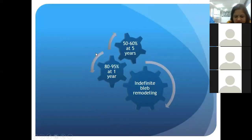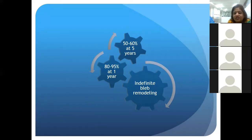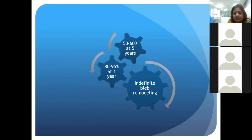We all know that trabeculectomy even today remains the gold standard for glaucoma surgery. The basic goal of the surgery is to establish a stable surgical fistula, and one needs to ensure that there is constant flow through that fistula. But the problem we encounter is there is a concept called indefinite bleb remodeling — a bleb that may appear functional and good immediately post-op may not appear so over the course of months and years.